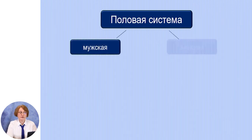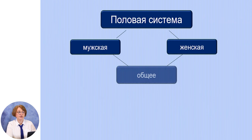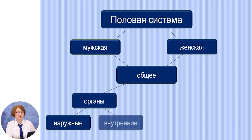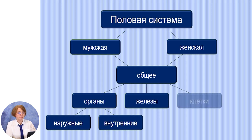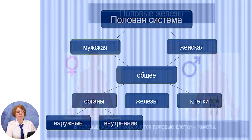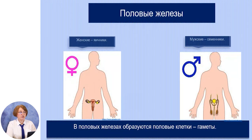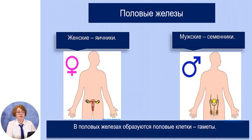В половом размножении принимает участие половая система человека. Человек – это раздельнополое существо, поэтому есть мужская и женская половая система. У них есть общие черты – органы наружные и внутренние. Есть железы и есть клетки или гаметы. Женские половые железы – это яичники. Мужские половые железы – это семенники. В половых железах образуются половые клетки или гаметы.